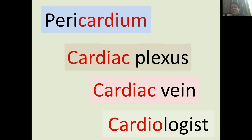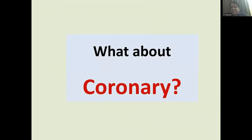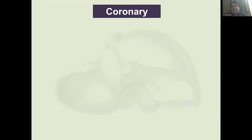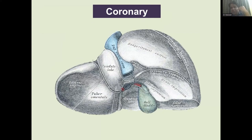We've covered the nerves and veins of the heart using 'cardiac,' but what about the arteries? We know the coronary arteries supply the heart. Interestingly, 'coronary' also appears in the coronary ligaments of the liver, and even in the knee joint — which has nothing to do with the heart. So 'coronary' does not mean heart. What does it mean? Let's find out.